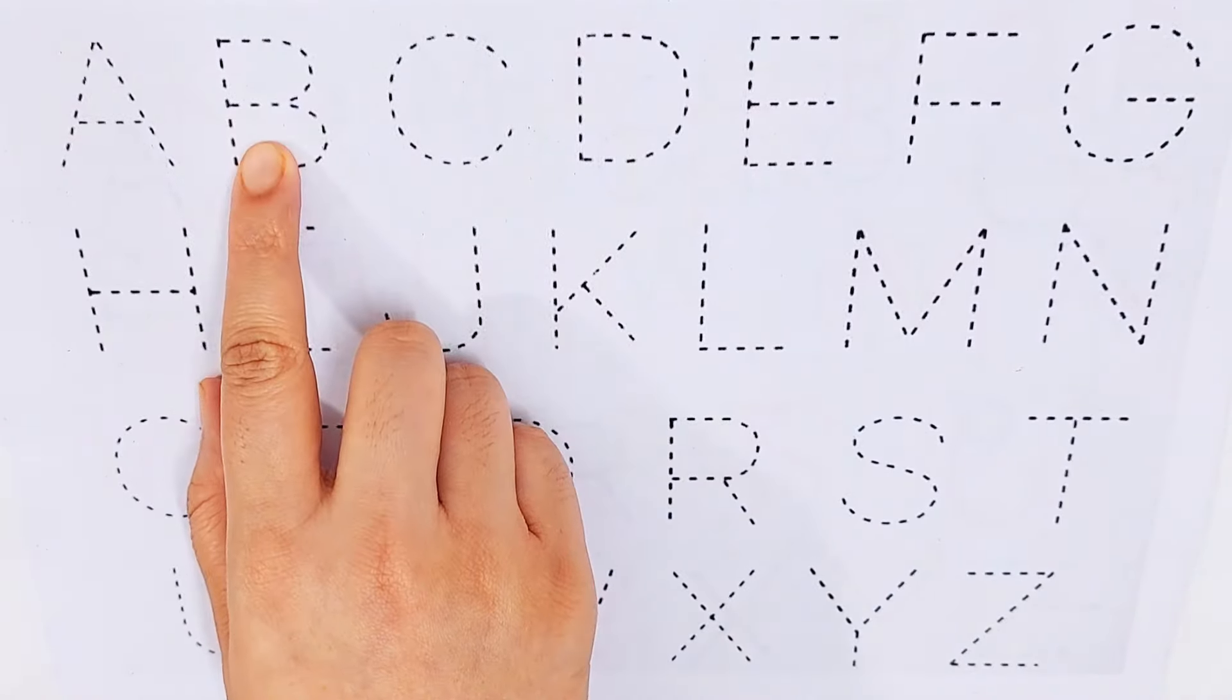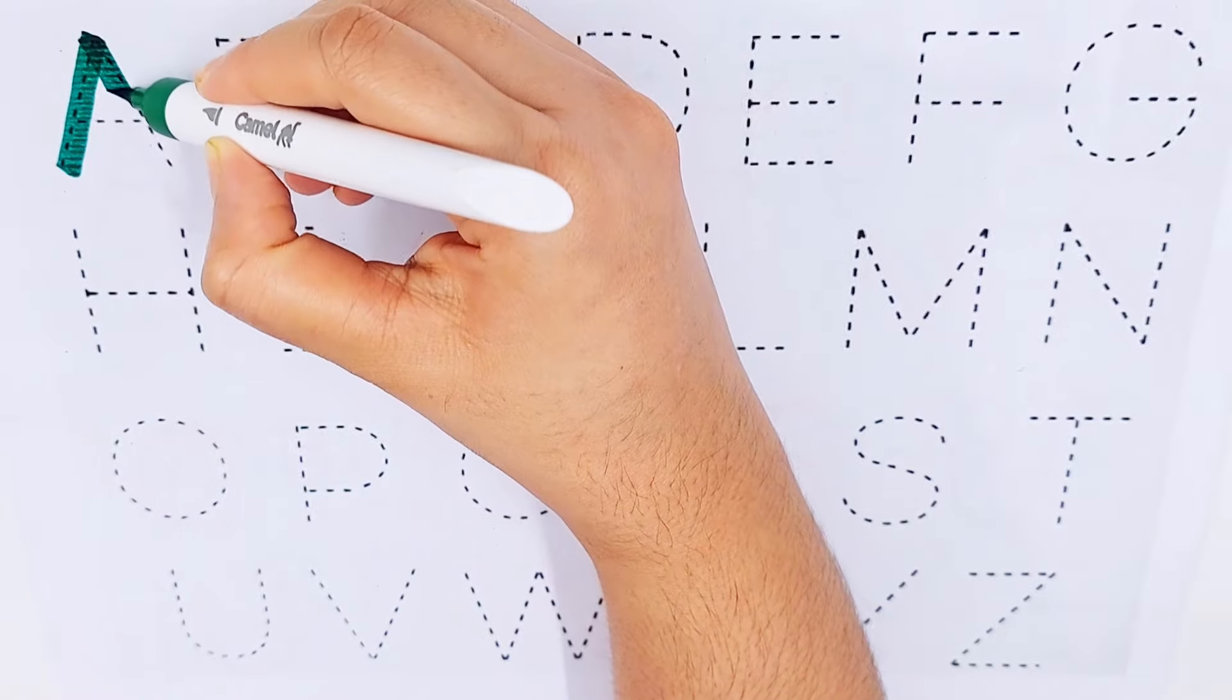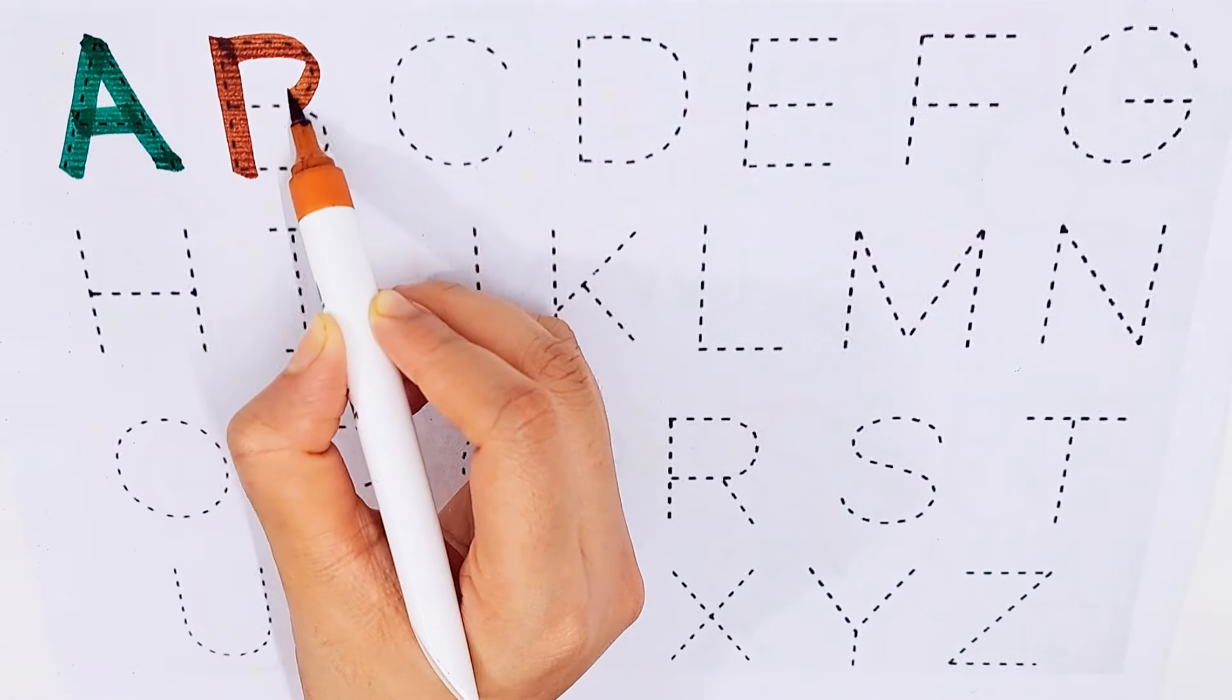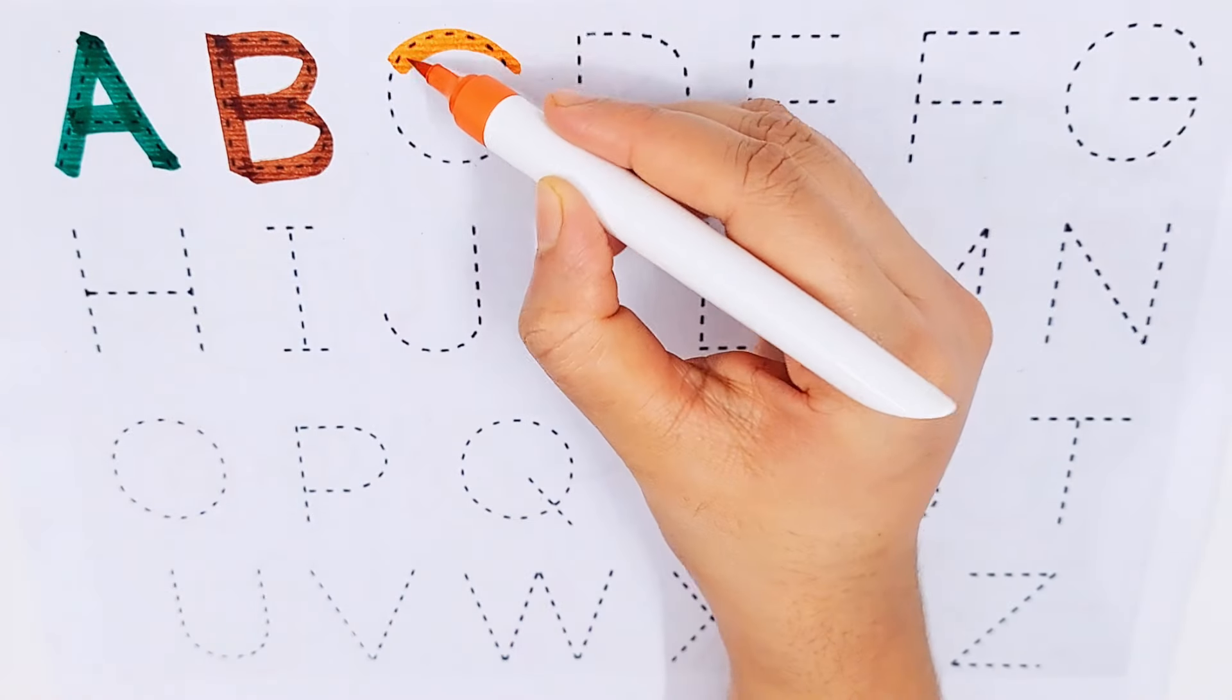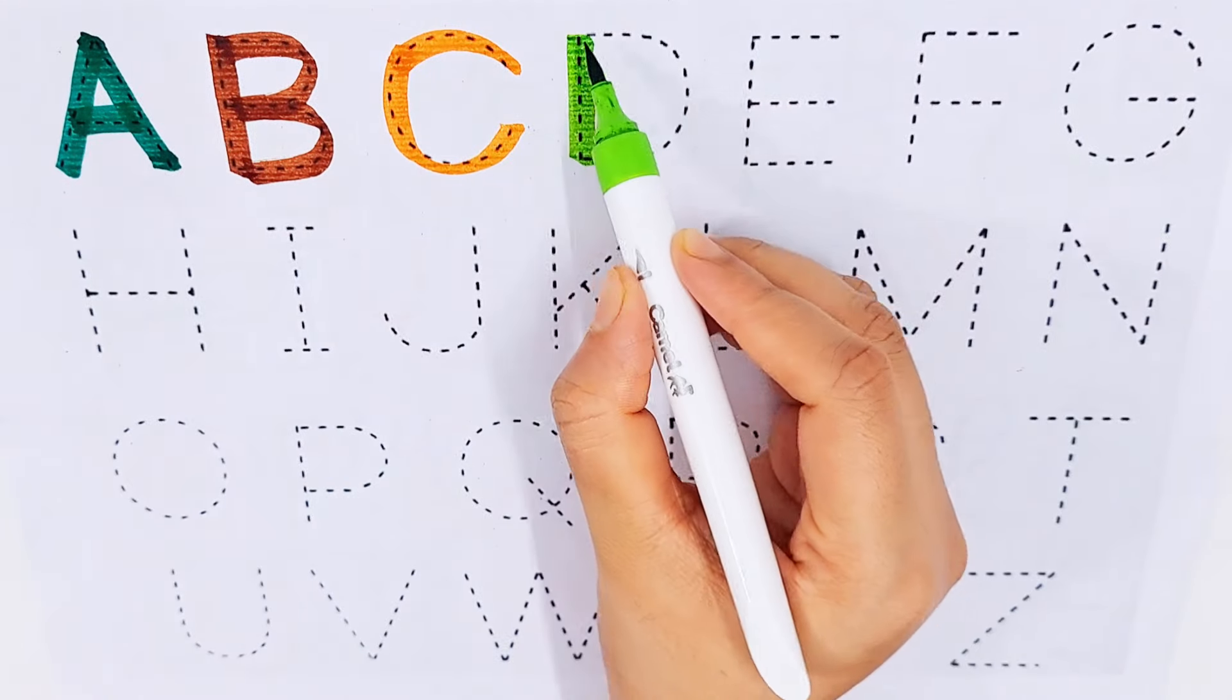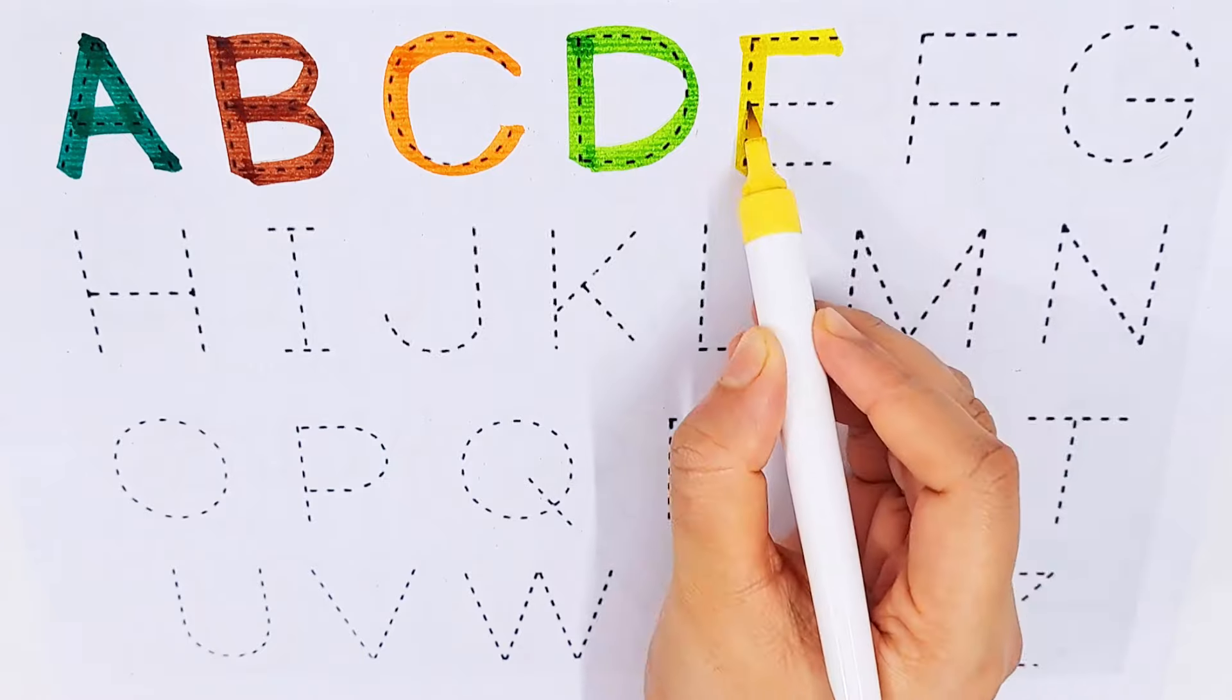A, B, C, D. A, A for ant. B, B for book. C, C for cat. D, D for dog. E, E for egg.